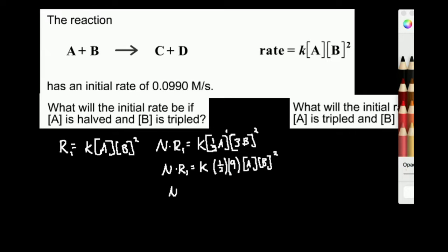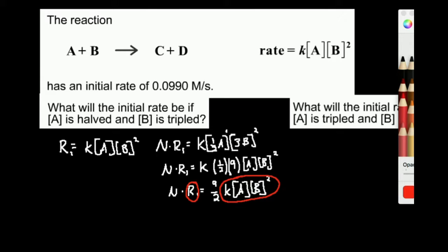So n times r1 is equal to — pulling the two numbers out in front — 9/2 times k times A times B squared. Now I recognize that rate 1 is literally equal to k times A times B squared. They're equal quantities, so they cancel out. If r1 equals k times A times B squared, you can substitute r1 on that side, and r1 on the other side, they cancel. That means n, the factor by which the rate changes, is 9/2.